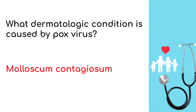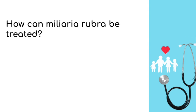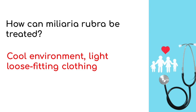How can miliaria rubra be treated? With a cool environment and light, loose-fitting clothing. Miliaria rubra is also called heat rash. It occurs due to sweat glands not being fully developed, so sweat accumulates and obstructs the eccrine sweat glands, leading to an erythematous papular rash that can be itchy and painful.